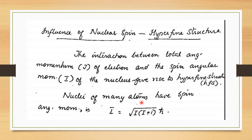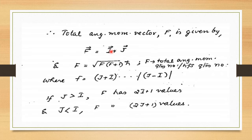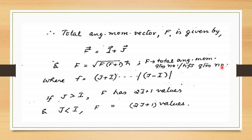The nuclei of many-electron atoms have spin angular momentum i = √(i(i+1))·ℏ. The total angular momentum vector f is given by f = i + j, with magnitude |f| = √(f(f+1))·ℏ, where f is the HFS quantum number.